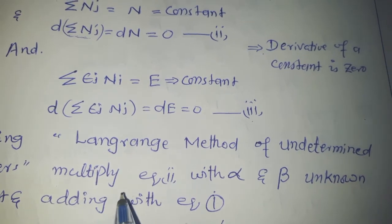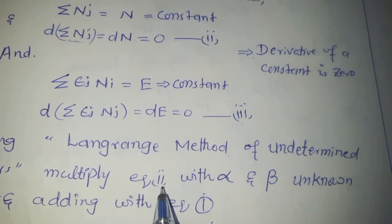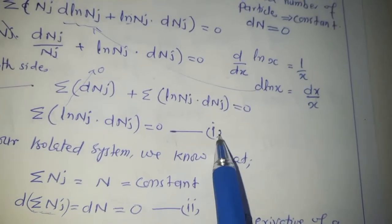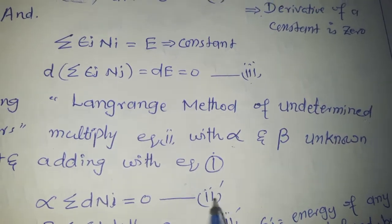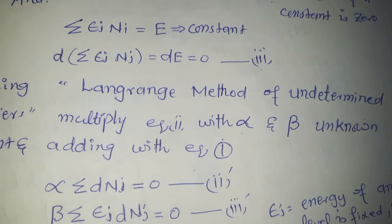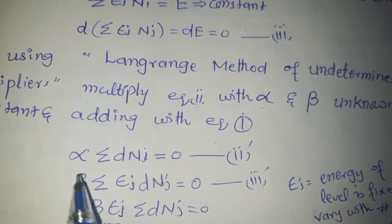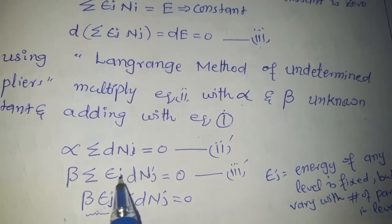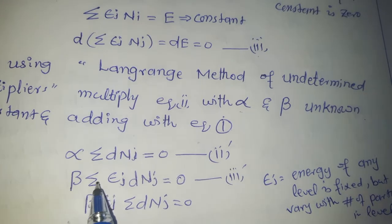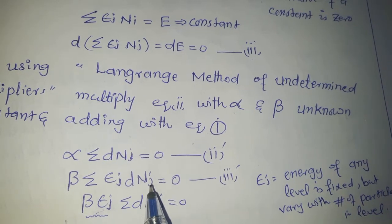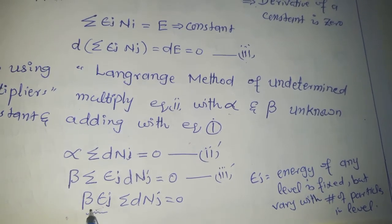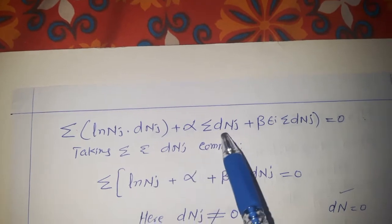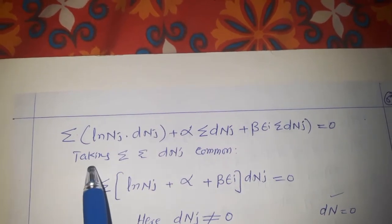Now using the Lagrange method of undetermined multipliers: we multiply equation 1, equation 2, and equation 3 by some unknown constants — alpha and beta — then add them to equation 1. We multiply equation 2 by alpha and equation 3 by beta. The energy of a level is constant, so we take it outside, and take the differential of the number of particles in each level. Substituting the values from equations 1, 2, and 3 and summing all equations.